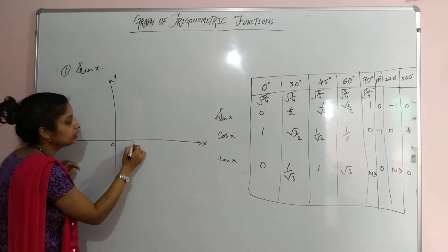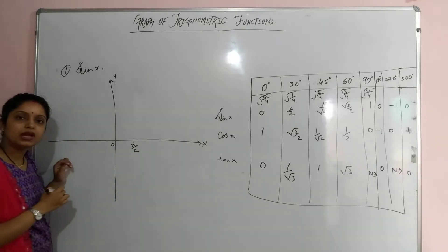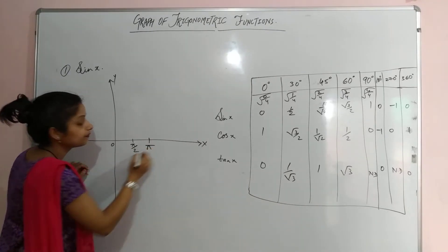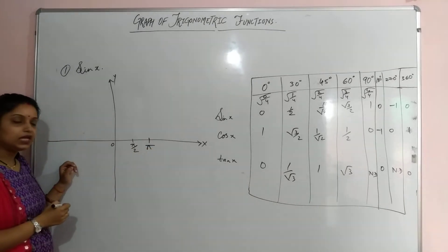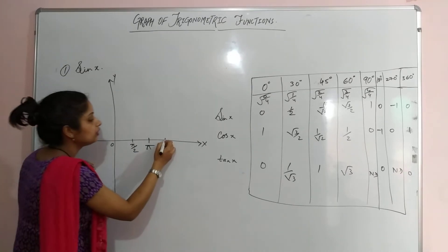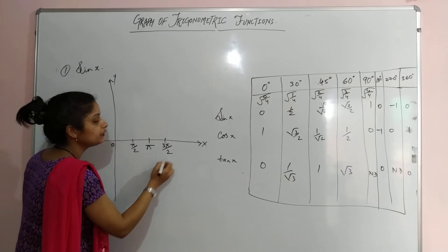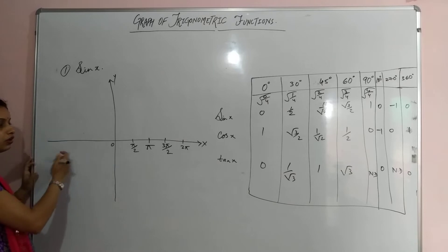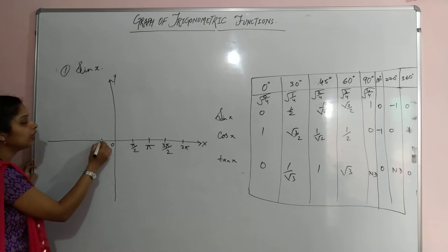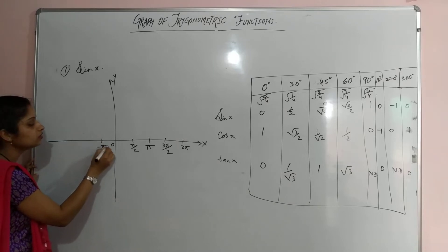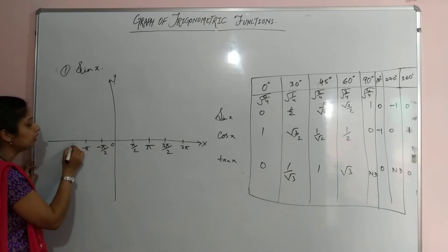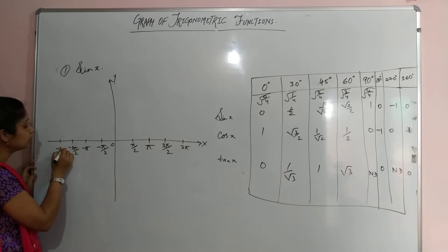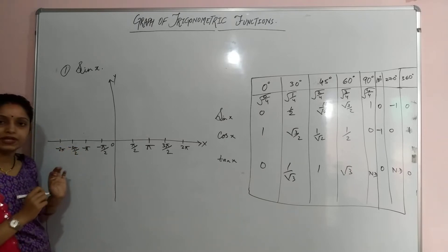On the positive x-axis I will mark π/2 (90°), then π (180°), then 3π/2 (270°), and then 2π. Similarly on the negative side: −π/2, −π, −3π/2, and −2π.